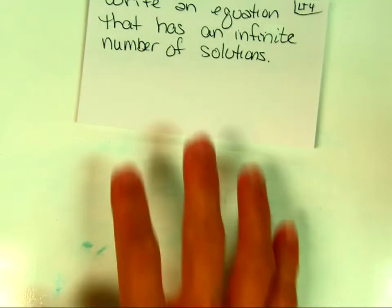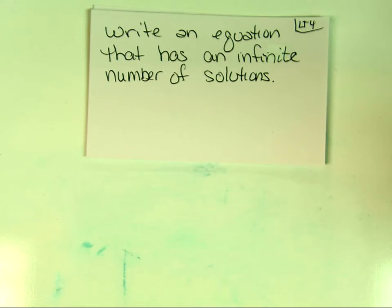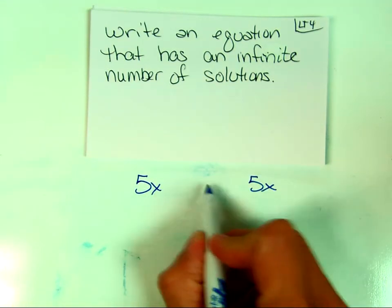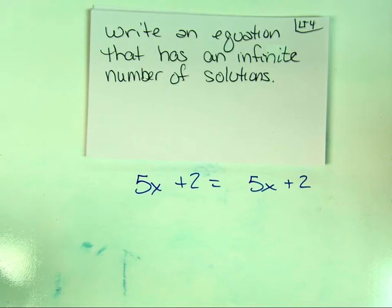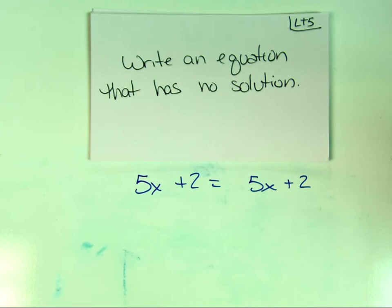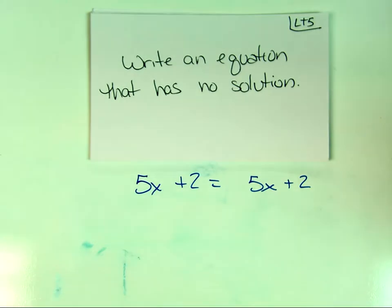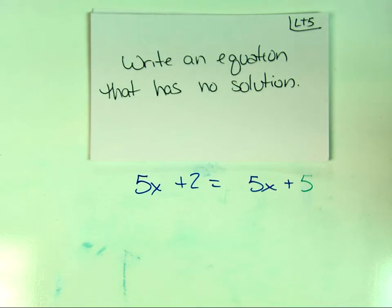To write an equation with infinite solutions, both sides just have to be the same — like 5x equals 5x, or 5x plus 2 equals 5x plus 2. For no solution, keep the x coefficients the same on both sides but change a constant, like 5x plus 2 equals 5x plus 7 — when the x's cancel, you get an untrue statement.